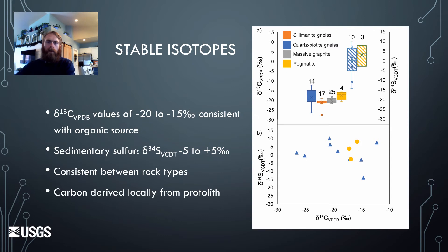We did carbon isotope and sulfur isotope analyses at the USGS G3 Science Center lab. The carbon isotope values are remarkably consistent — they range from about minus 20 to minus 15, which are consistent with an organic source. Sulfur isotopes of minus 5 to plus 5 are consistent with sedimentary sulfur. This indicates that the carbon was derived locally from a pelitic protolith and that we don't need to invoke external carbon sources to explain the graphite enrichment.